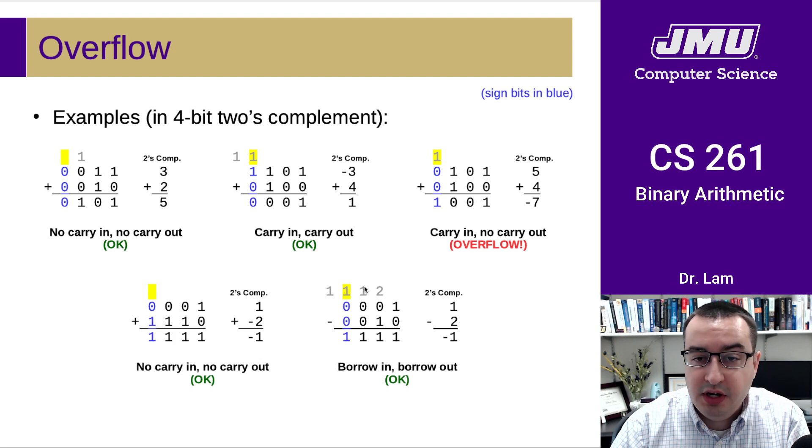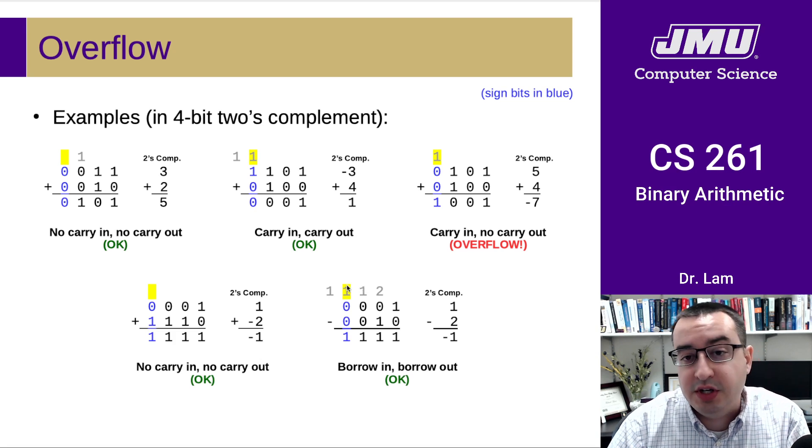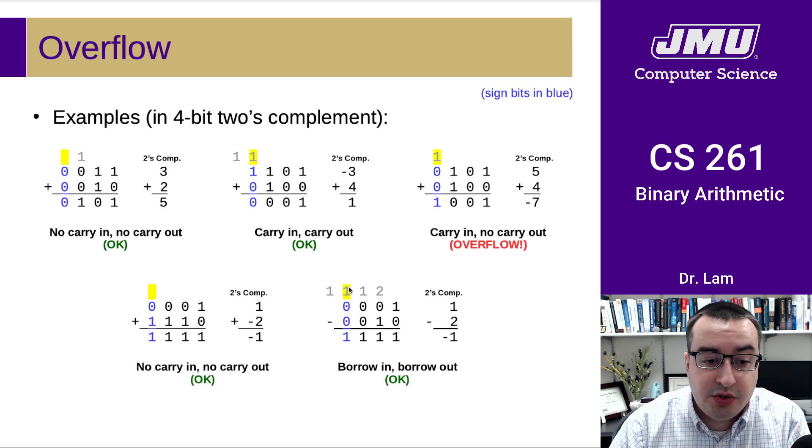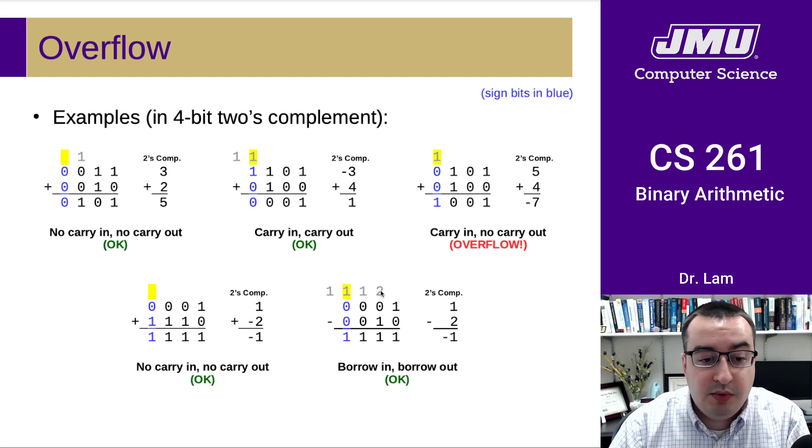And then we would borrow another 10 in binary, which is two, right? So we would borrow two, borrow two, borrow two. So now we have ones left in all of these columns. And we have two here so that we can now subtract one and get one. Here now we have the one left over from the borrow minus zero, which is one. One minus zero, which is one. And so here we have a borrow into the most significant digit. But we also have a borrow out of the most significant digit. So we had a borrow coming in and a borrow coming out.